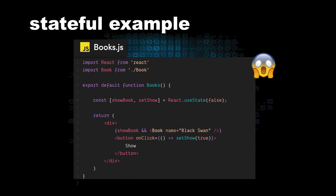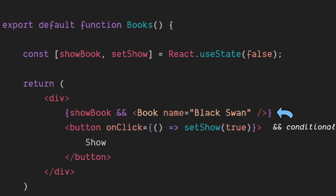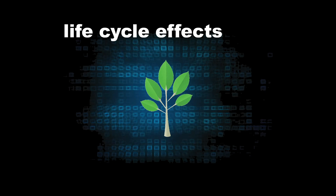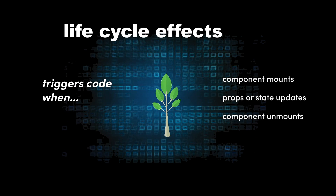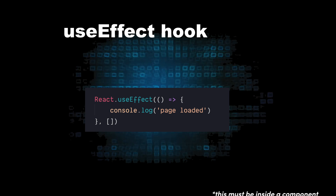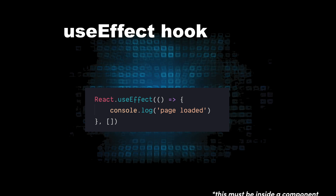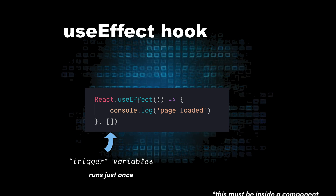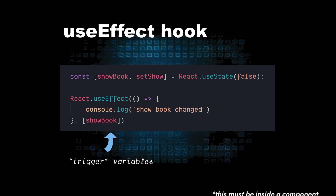Let's do another example with state and some other things we haven't seen before. First, we initialize a hook to false. Then we use that hook to determine whether we show a book or not with an and conditional. We pass our setter function as a callback to onclick, so when we click that button, showBook will be set to true. Let's talk about lifecycle effects — these are just functions triggered when a component is created, updated, or removed from the page. Conveniently, these are all managed with the useEffect hook. The first argument is a function that runs when your component is created on the page. When and if it runs again depends on the second argument, which is an array of triggers. The simplest way to think about it is when one of these triggers changes value, the function will run again — for example, if showBook changes to true.